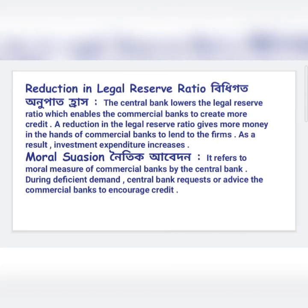The next measure is reduction in the legal reserve ratio. If the central bank of an economy reduces its legal reserve ratio, then the amount of money available to commercial banks for credit or loans will be increased. When the amount of credit increases, people's income will increase, and that implies that aggregate demand of the economy increases.